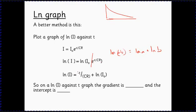If you look at this equation, that means that if we plot a graph with the natural log of I on this axis and t on this axis, what we'll get is a straight line graph with a negative gradient, and that gradient will be 1 over CR.